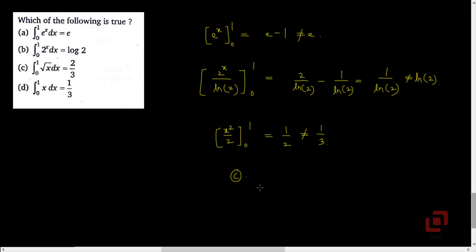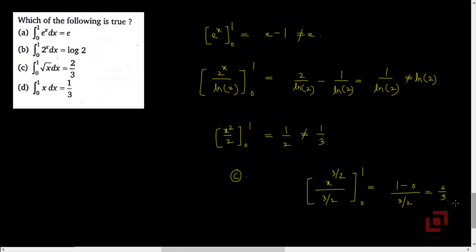In the actual examination, there is no need to waste time finding the integral of root of x. But let's verify it here: the integral of root of x is x raised to 3/2 upon 3/2, with limits 0 and 1. 1 raised to 3/2 is 1, 0 raised to 3/2 is 0, so the result is 1 upon 3/2, which gives 2/3. That indeed verifies that option C is correct.